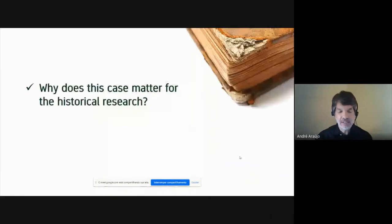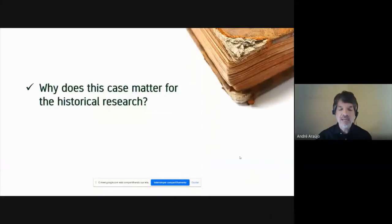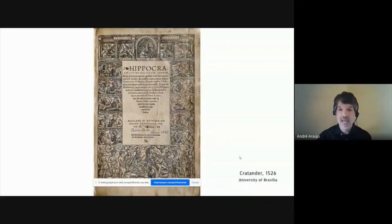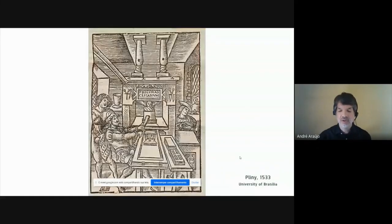But why does this case matter for historical research? And how far is it enlightening also as a teaching strategy for, for example, an undergraduate course on early modern history? As I said at the beginning of my talk, the outcome of this close analysis is neither as spectacular as the discovery of a forgery nor as the discovery of a lost or extremely rare book. Copies of Cratander's 1526 edition of the Hippocratic Corpus can be found in many library collections. And understanding what was going on at the title page of the copy housed at the University of Brasilia was quite simple. However, this copy invited me to delve into the history of the 16th century book.